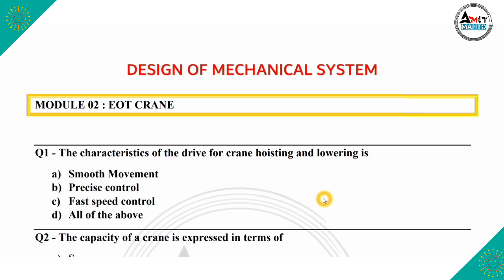Hello friends, welcome back to my YouTube channel. Today we will learn Design of Mechanical Systems. In this subject, today we will learn MCQ based on EOT crane. The first question is: the characteristic of the driver for crane hoisting and lowering is smooth movement, precise control, fast speed control, or all of the above.